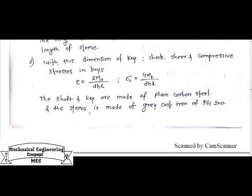The key and the shaft are made of basic plain carbon steel materials such as C40, C20, C30, or C35. The sleeve or MOF is made of gray cast iron. The basic grading is defined as FG200, where F represents iron, G represents gray, and 200 represents the ultimate strength of that material in Newton per mm² or megapascal.